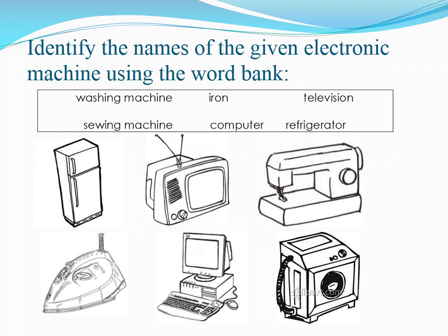Now the next picture — the name of the machine is Television. Very good! And what is the spelling of Television? T-E-L-E-V-I-S-I-O-N, Television. Now the next picture of the machine — yes, it's Sewing Machine. And what is the spelling of Sewing Machine? S-E-W-I-N-G M-A-C-H-I-N-E, Sewing Machine. Very good!